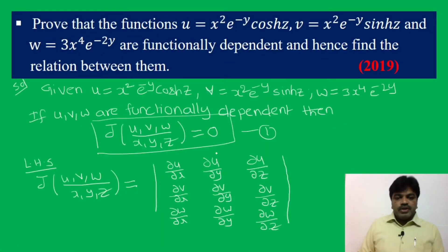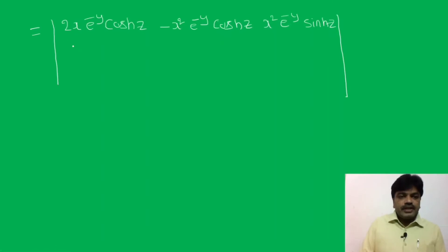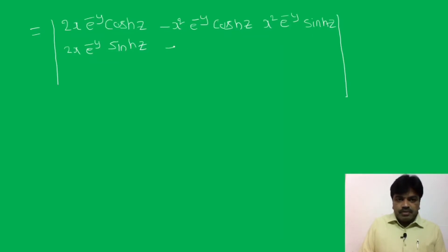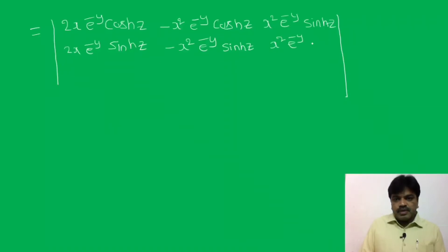For v = x² e^(−y) sinh(z): ∂v/∂x = 2x e^(−y) sinh(z); ∂v/∂y = −x² e^(−y) sinh(z); and derivative of sinh(z) is cosh(z), so ∂v/∂z = x² e^(−y) cosh(z). This is the second row.